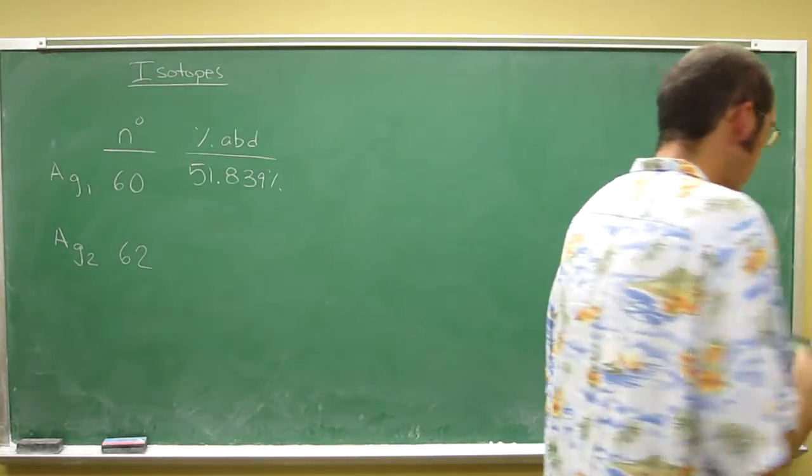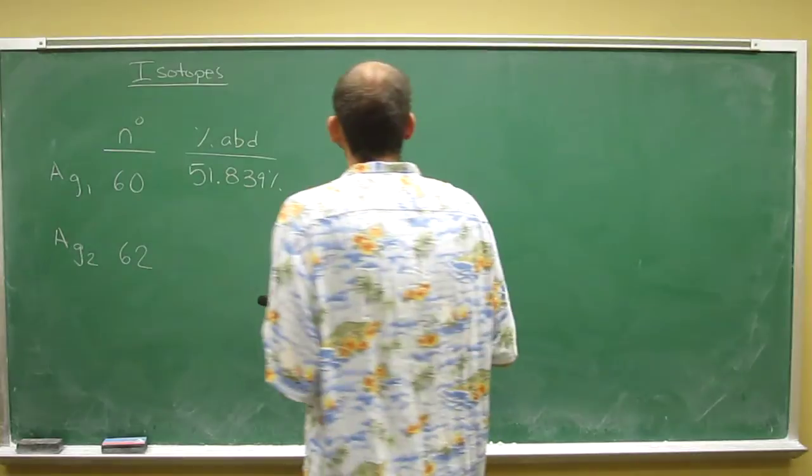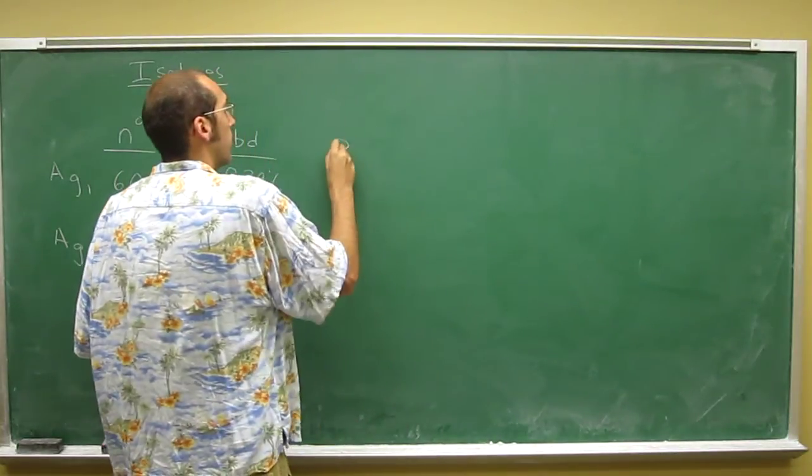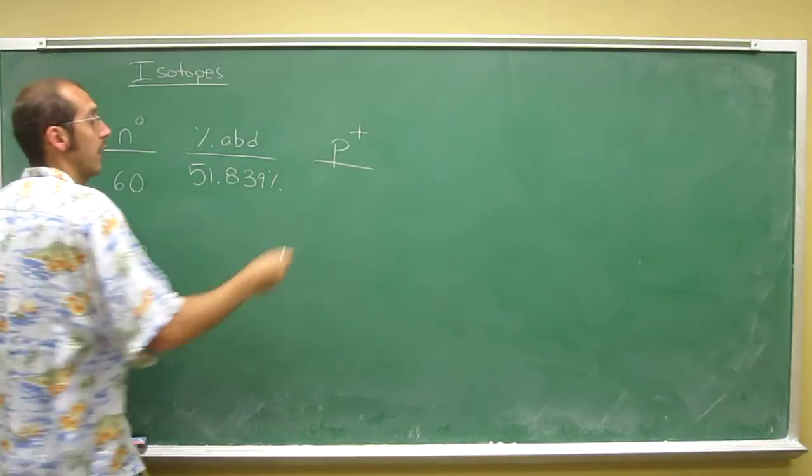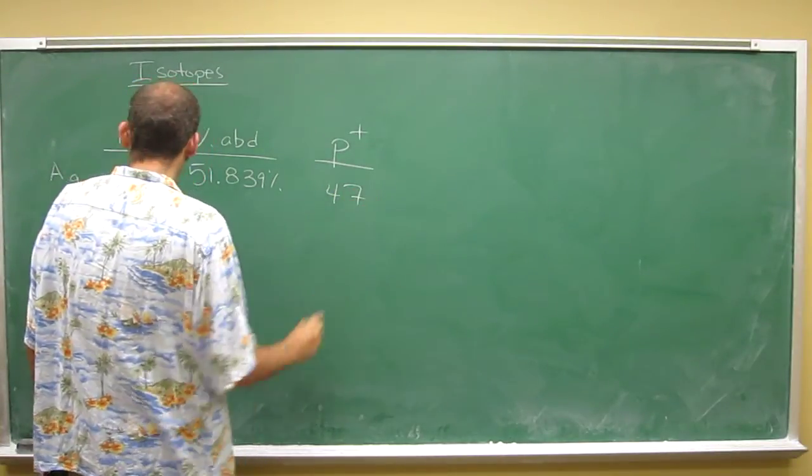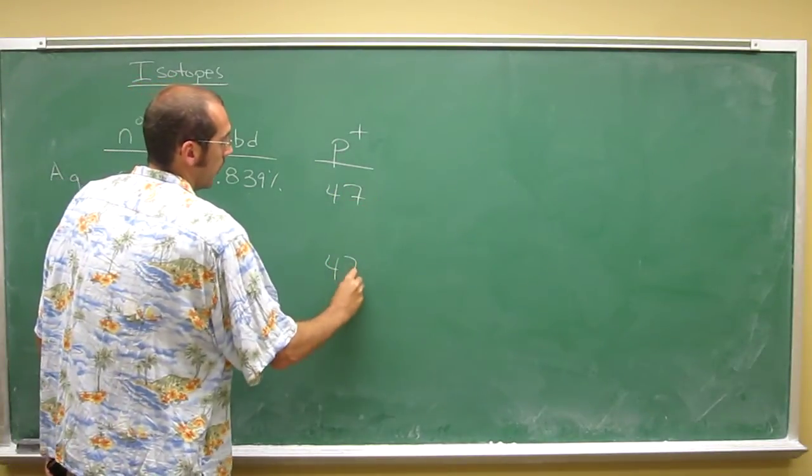And when you do, you'll see that it's number 47, so that's the number of protons it has. So remember to be a silver atom, you have to have 47 protons, so that one's got 47 and that one's got 47.